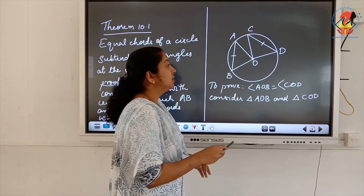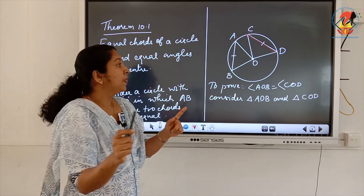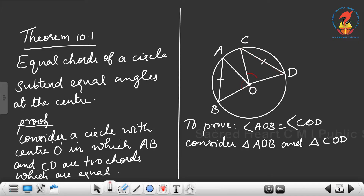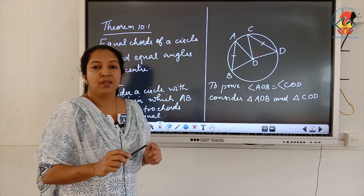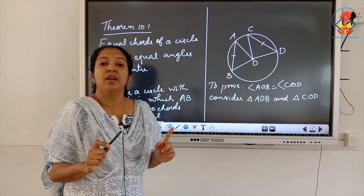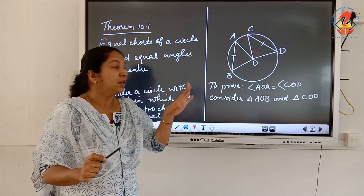For this theorem, consider a circle with center O in which two chords AB and CD are given. Suppose AB equals CD. What we have to prove is that angle AOB is equal to angle COD — the angles made by the two equal chords at the center are equal.